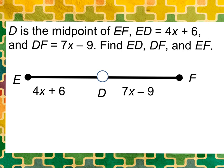ED is equal to 4X plus 6. Notice it's notated on the picture. Pictures help out a lot. So I encourage you to use pictures all the time. DF is equal to 7X minus 9. That's notated here as well on the picture.